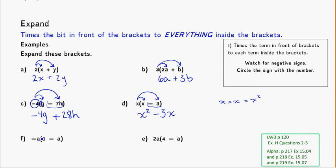Another example with a variable in front, this time it is negative, so I'm going to circle the whole thing — negative a — and times it through to both terms inside. Negative a times five becomes negative five a. You can imagine an invisible one with the a. The next step is negative a times negative a: negative times negative becomes positive, and a times a gives me a squared, because it's a times a.